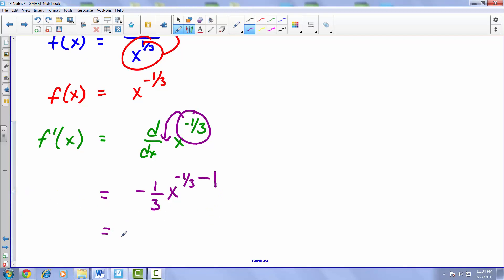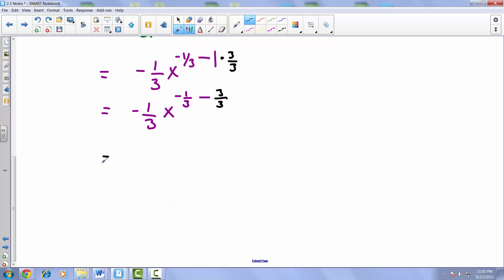So then we end up with negative 1 third x raised to the negative 1 over 3 minus, doing a little bit of foo-foo here, to get the same bottoms we'd have to multiply this by 3 over 3, so ultimately we have minus 3 over 3. Simplifying things, we end up with negative 1 third x raised to the negative 4 over 3.